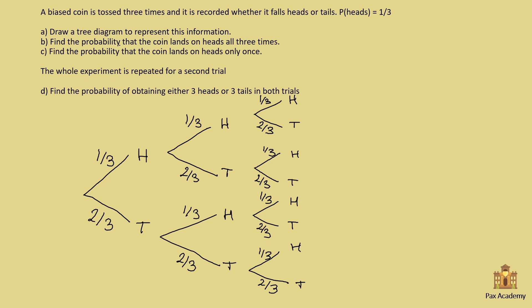Part B says find the probability that the coin lands on heads all three times. So we want the probability of getting heads on the first, heads on the second, and heads on the third toss — that is, the probability of head, head, head. It's always good to go back to the tree diagram and follow the path.